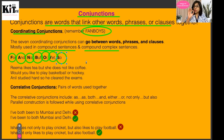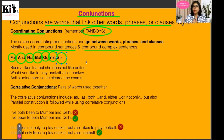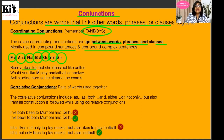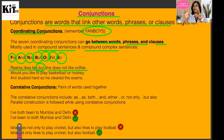If these FANBOYS words are used somewhere in a sentence, try to see and understand that the sentence is a compound sentence. These conjunctions can go between words, phrases, or clauses. For example: 'Reema likes tea, but she does not like coffee.' There are two equal parts — 'Reema likes tea' and 'she does not like coffee.' This is a compound sentence with two main thoughts. 'Would you like to play basketball or hockey?'